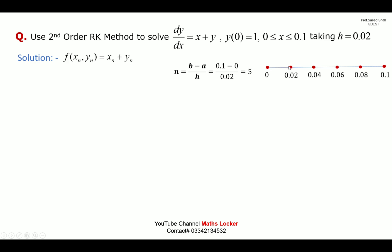The x-values are: 0, then 0 + 0.02 = 0.02, then 0.04, 0.06, 0.08, 0.10. Counting: 0, 1, 2, 3, 4, 5 — so we run iterations from 0 to 5. The formula is y_{n+1} = y_n + (1/2)(k₁ + k₂), x_{n+1} = x_n + h. This is the second-order RK method.